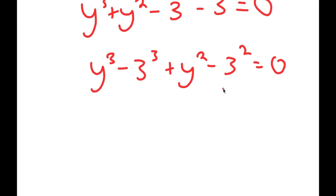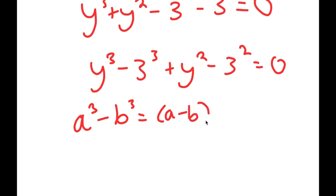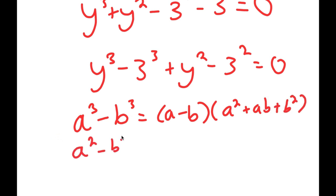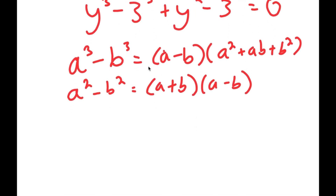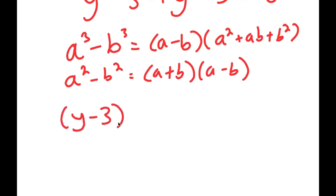From here, I can use two important properties. The first property is that a to the power of 3 minus b to the power of 3 equals a minus b times a squared plus ab plus b squared. The second property is a squared minus b squared, which equals a plus b times a minus b. So y to the power of 3 minus 3 to the power of 3 can be rewritten as y minus 3 times y squared plus 3y plus 3 squared.